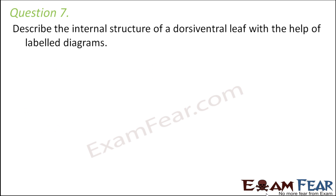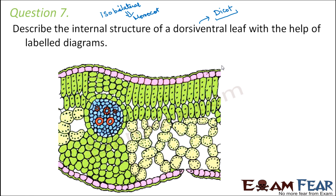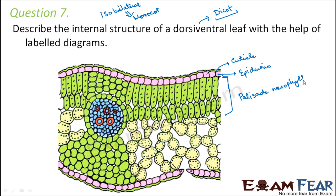The last question: describe the internal structure of a dorsiventral leaf with the help of a labelled diagram. A dorsiventral leaf is just another term for a dicot leaf, while an isobilateral leaf is the term used for a monocot leaf. The dicot leaf has an outer waxy cuticle whose thickness decreases going downward, two layers of epidermis (upper and lower), and two types of mesophyll cells. The top layer is called palisade mesophyll, which is compactly arranged side by side.